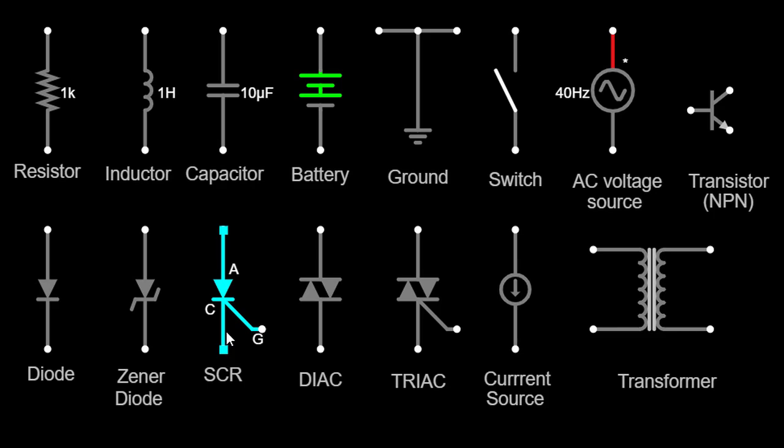The DIAC symbol consists of two diodes facing each other, sharing a common terminal. It is a bidirectional semiconductor device that can conduct current in both directions when triggered. DIACs are used in applications such as triggering triacs, controlling power levels in AC circuits, and generating timing signals.